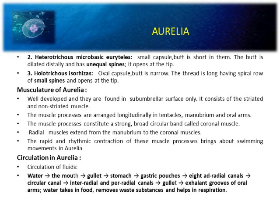Circulation in Aurelia involves the circulation of fluid through a specific passage. Water enters the mouth, then the gullet and stomach, gastric pouches, eight radial and ad-radial canals, circular canals, inter-radial and per-radial canals, gullet, and out through oral arms. Water takes in food, removes waste substances, and helps in respiration.